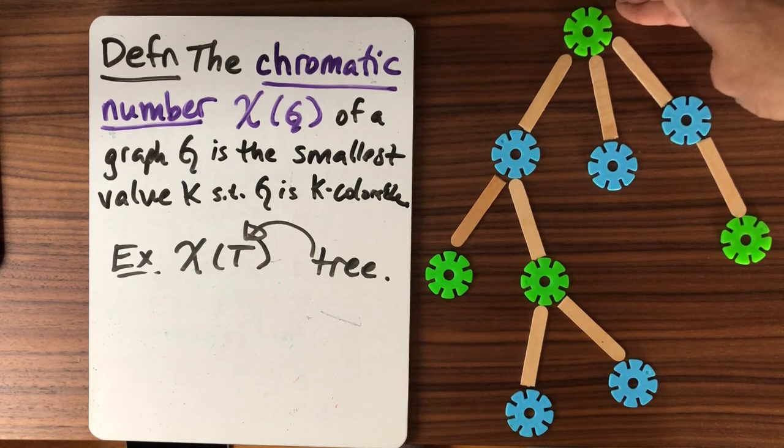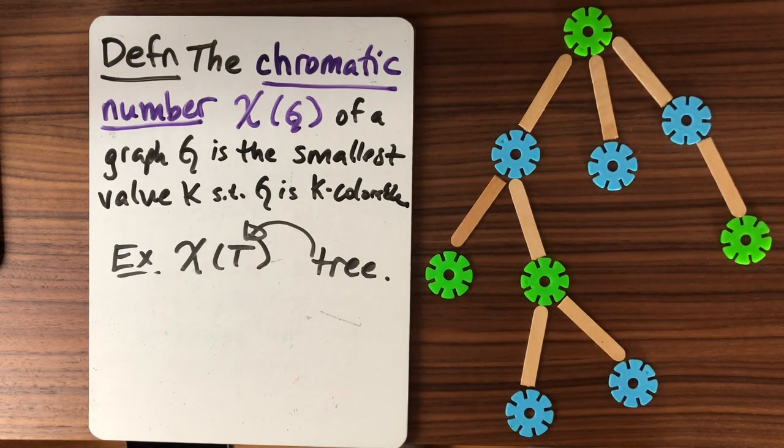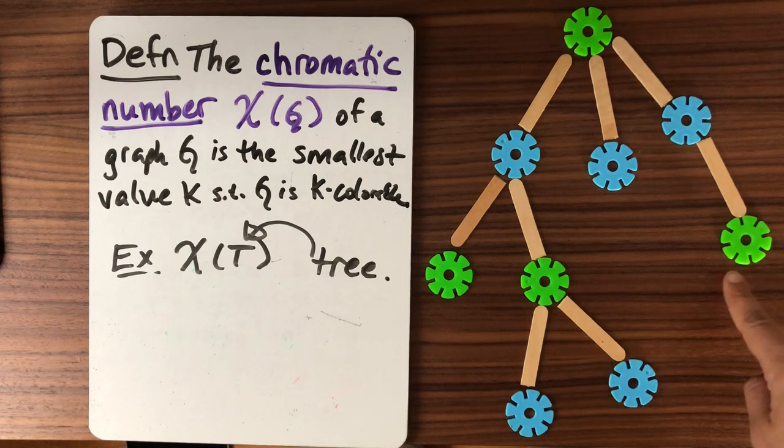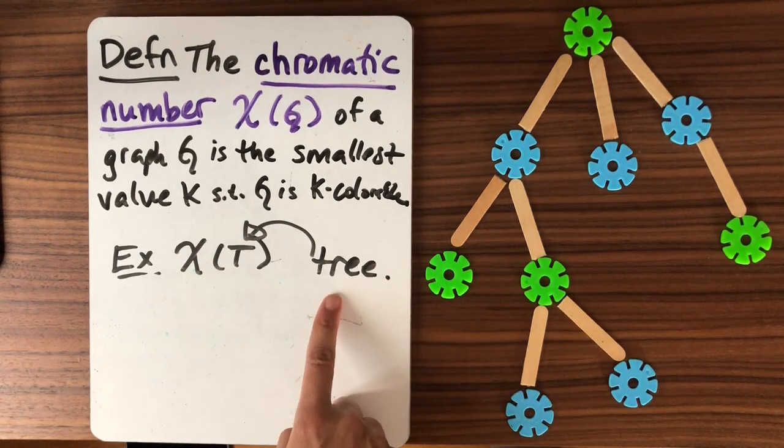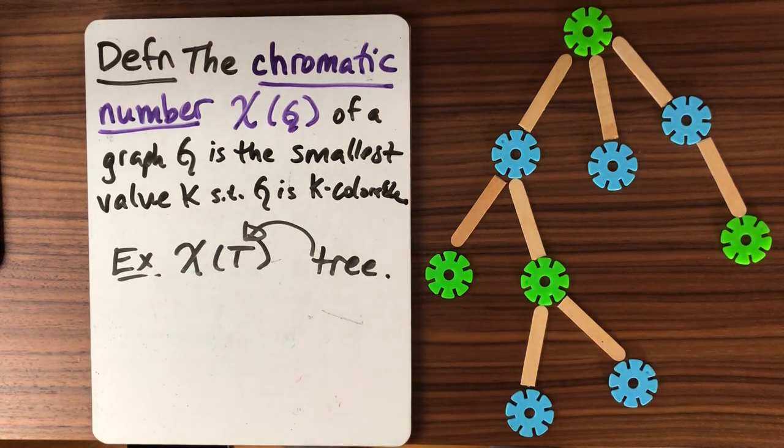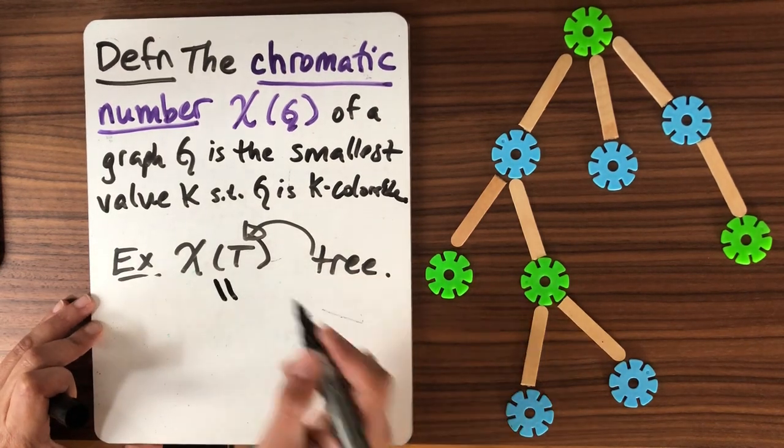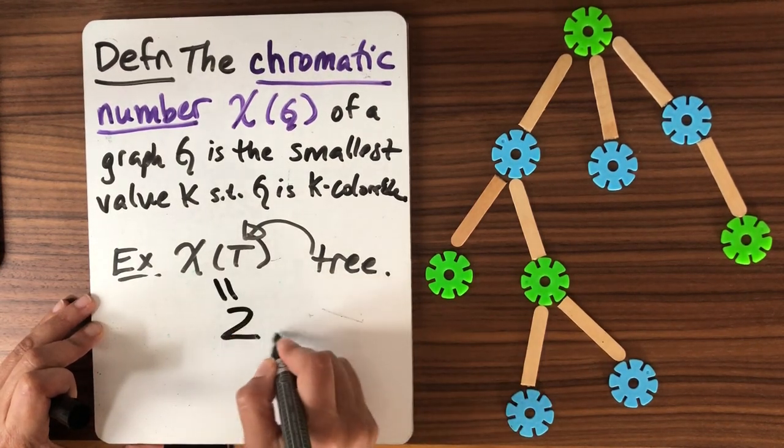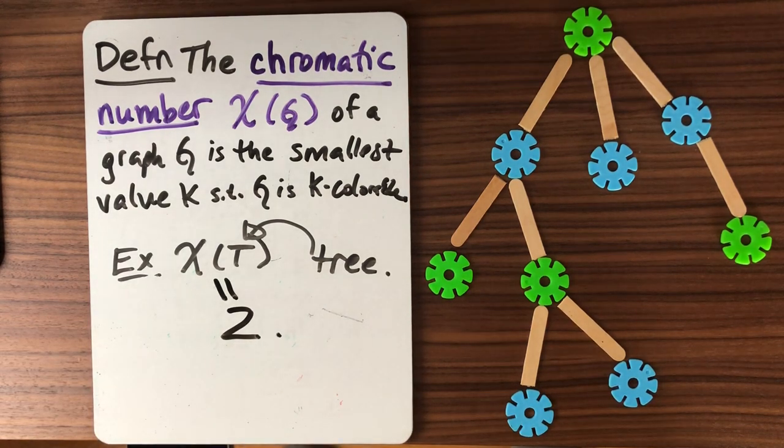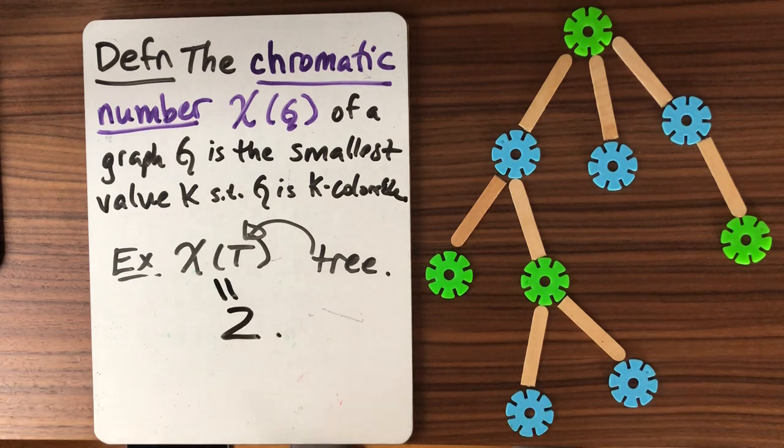So we can see that if we start at one vertex of my tree, and it doesn't matter which one, we color it green, and then we look at all of its neighbors we color them blue, and now step down again color them all green, and step down again color them all blue. Because a tree by definition is a graph with no cycles, I'm never going to try to color a vertex twice, so I'll always be able to do this. So chi of T for T a tree is 2. So every tree is 2-colorable. Next we'll look at all graphs that are 2-colorable and the special properties that they have.